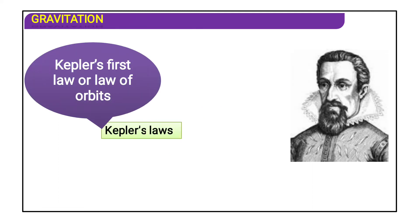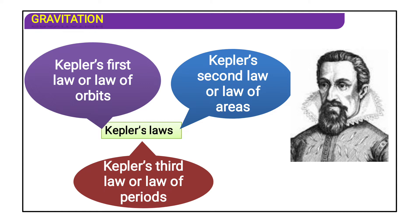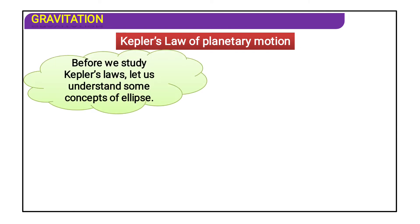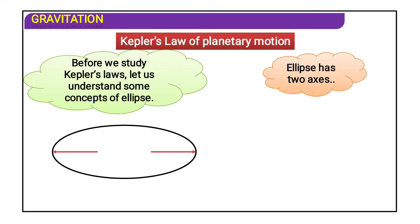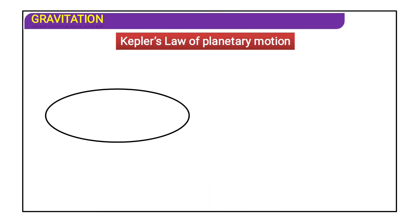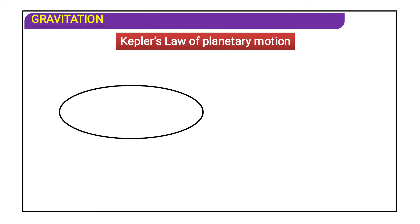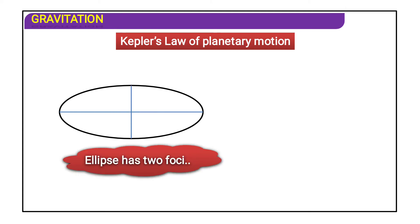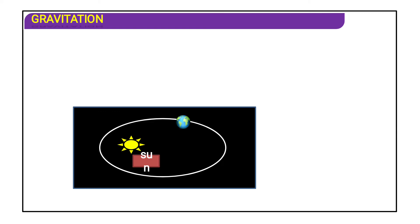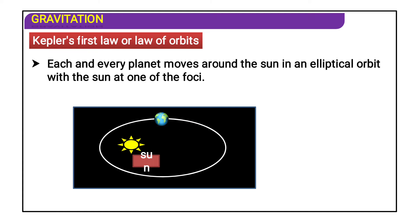Kepler's first law is the law of orbits, the second law is the law of areas, and the third law is the law of periods. Before studying Kepler's laws, let us understand some concepts of ellipse. An ellipse has two axes: a major axis and a minor axis. The semi-minor axis and semi-major axis are important components. An ellipse also has two foci, F1 and F2.